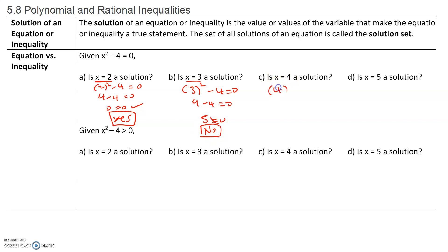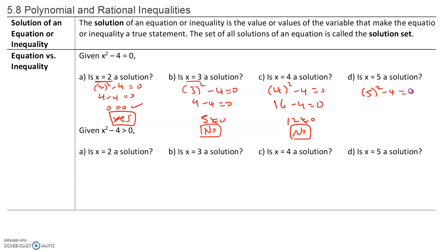What about x equals 4? We have 4 squared minus 4 equals 0. 4 squared is 16, and we can already tell that 12 is not equal to 0, so it's not a solution. What about 5? We get 5 squared minus 4. We want to check, does that equal to 0? That's 25 minus 4, which is 21. 21 is not equal to 0. Therefore, this is also not a solution.